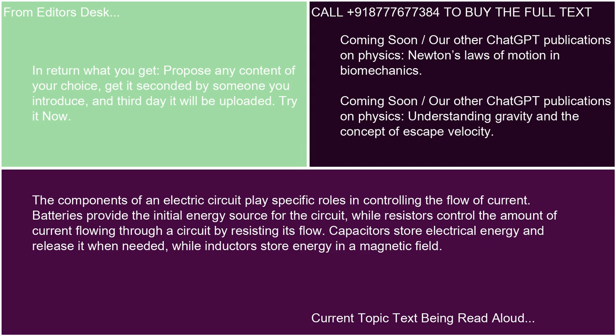The components of an electric circuit play specific roles in controlling the flow of current. Batteries provide the initial energy source for the circuit, while resistors control the amount of current flowing through a circuit by resisting its flow. Capacitors store electrical energy and release it when needed, while inductors store energy in a magnetic field. We'll see you next time.